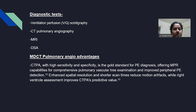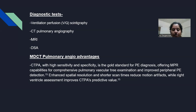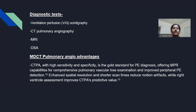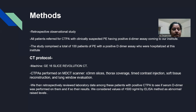The diagnostic tests used include ventilation-perfusion scintigraphy, CT pulmonary angiography, MRI, and pulmonary angiography. The advantage of CTPA is its high sensitivity and specificity as the gold standard for PE diagnosis, offering multiplanar reconstruction capabilities for comprehensive pulmonary vascular tree examination, improved peripheral PE detection, enhanced spatial resolution, shorter scan times, reduced motion artifacts, and improved right ventricle assessment.